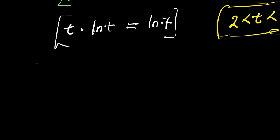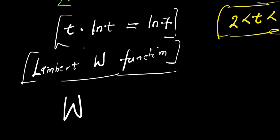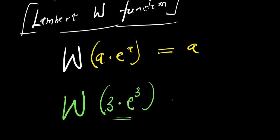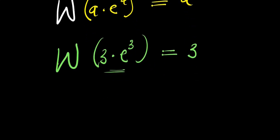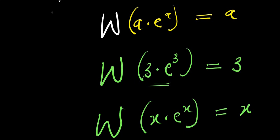We are now going to make use of what we call the Lambert W function. This is the function we are going to use to solve this problem, and it is represented with capital letter W. You only use this when you have an expression such as a times e to the power of a, and your result will be a. You can also use it with numbers — it must be something like 3 times e to the power of 3, in this form, and this equals 3. Even if you have x times e to the power of x and you take the Lambert W function of it, you get x as the result. So the expression must be in this form before you can apply the Lambert W function.